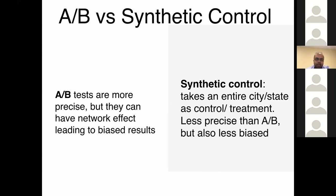At a high level, the difference between A/B and synthetic control: A/B testing is more precise because experimenters can define the control instead of inferring it. However, A/B testing also comes with biases especially relevant for marketplace scenarios like Uber, Airbnb, or eBay — something called network effect can lead to biased results. Synthetic control takes an entire city or state as control or treatment. It is less precise because we are inferring control, but also less biased because we are not splitting one city or state.